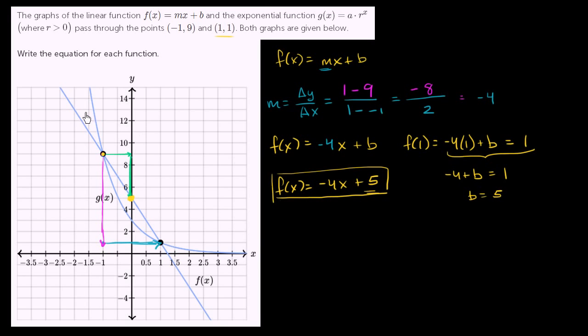Now let's figure out the exponential function. We could use the two points to figure out these two unknowns. For example, let's try this first point. So g(-1), which if we look at this right over here, it would be a·r^(-1). They tell us that g(-1) = 9. So a·r^(-1), that's the same thing as a/r = 9. Or we could multiply both sides by r, and we could say a = 9r.